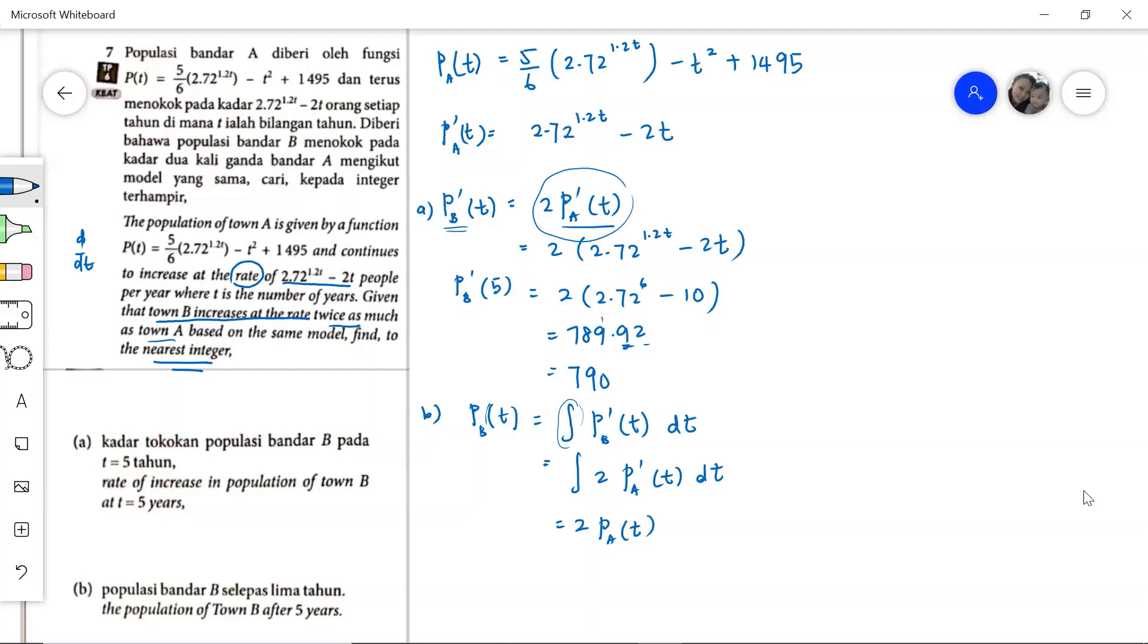Now we want to find when T equals 5. So substitute in. What is P_A? P_A is 5 over 6 times 2.72 raised to the power 1.2 times 5, which is 6, and then minus T squared, so T is 5, and then plus 1495.